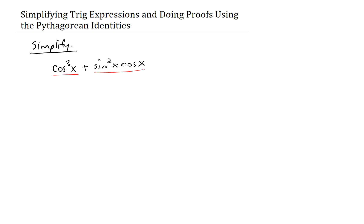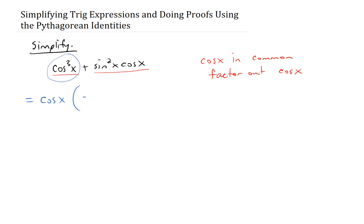When you look at the two terms, there's a cosine of x in common. So what we do is factor out the cosine of x. Pulling it out of the first term leaves behind cosine squared of x; pulling it out of the second term leaves plus sine squared of x. This is our favorite Pythagorean identity — sine squared of x plus cosine squared of x equals 1 — so this turns into cosine of x times 1, which is simply the cosine of x.